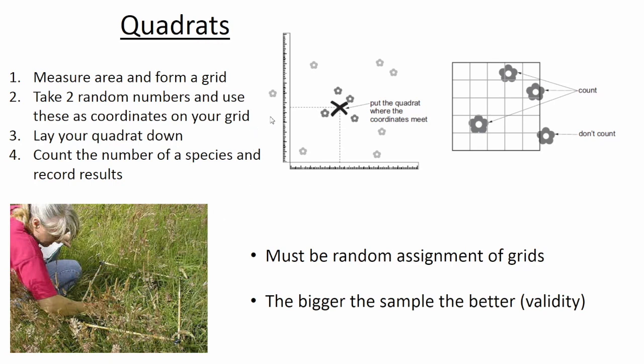You would use your calculator to take two random numbers from 0 to 10, or however big your grid is, and use these numbers as coordinates for where to place your quadrat. If you don't do this step it's not random. For sampling you have to have random assignment of grids. This is to make sure it's reliable and you're not just placing it in areas where you can see more flowers or plants. Then you lay your quadrat down wherever your coordinates were and count the number of species and record the results in a table.